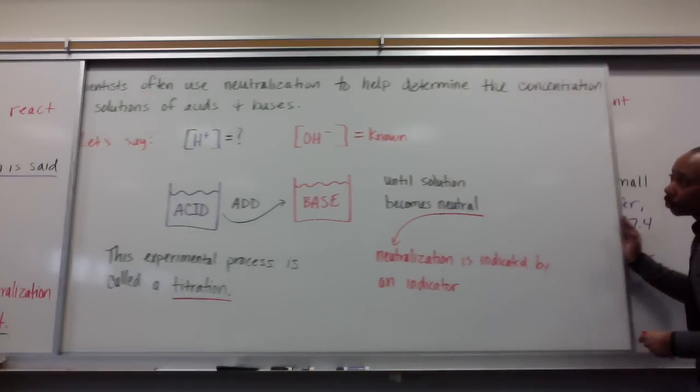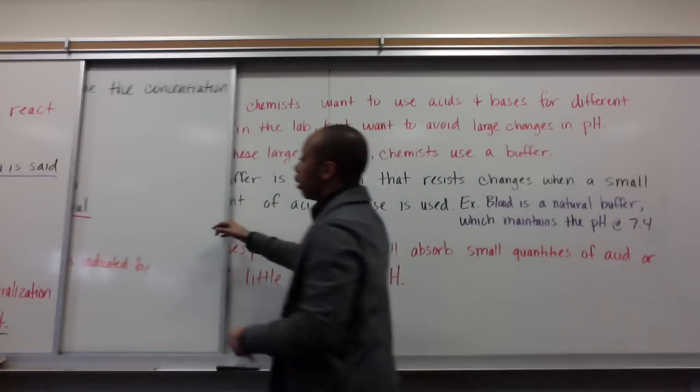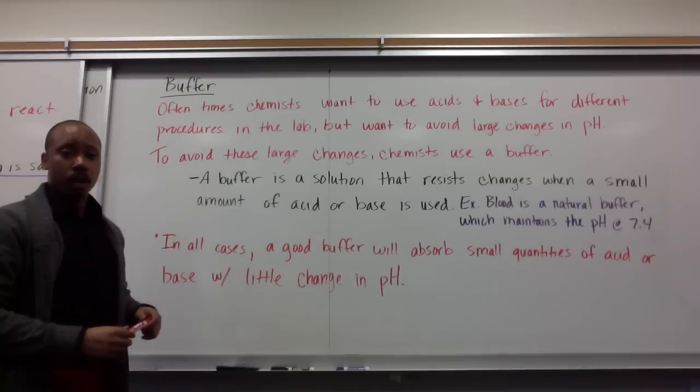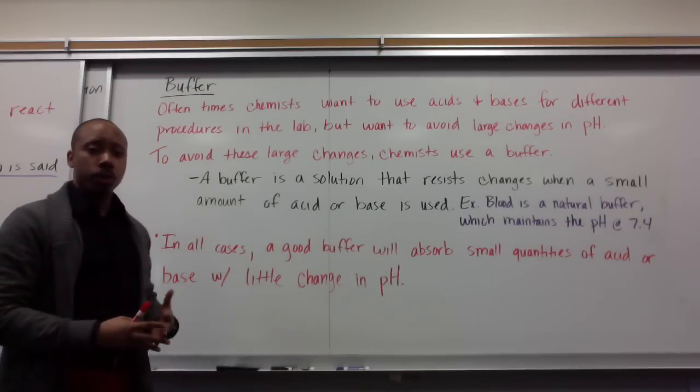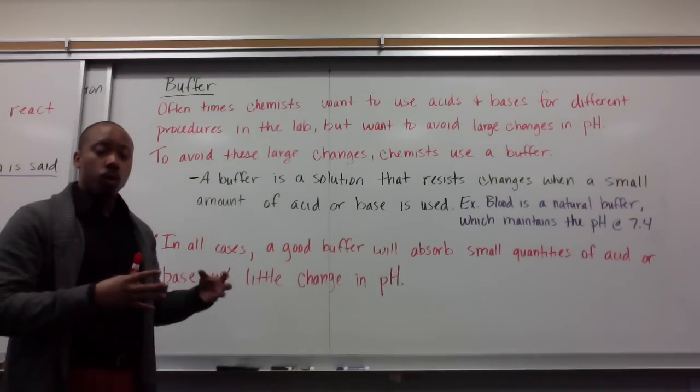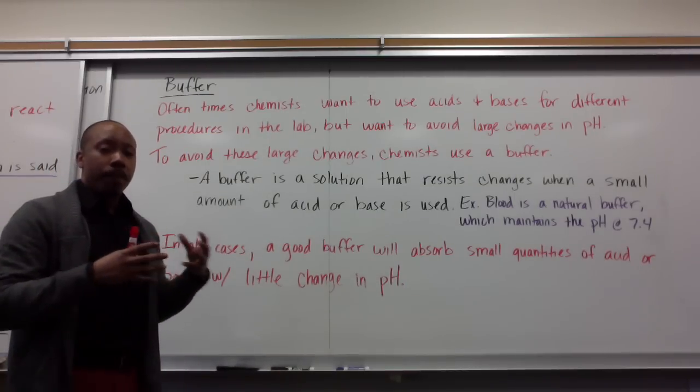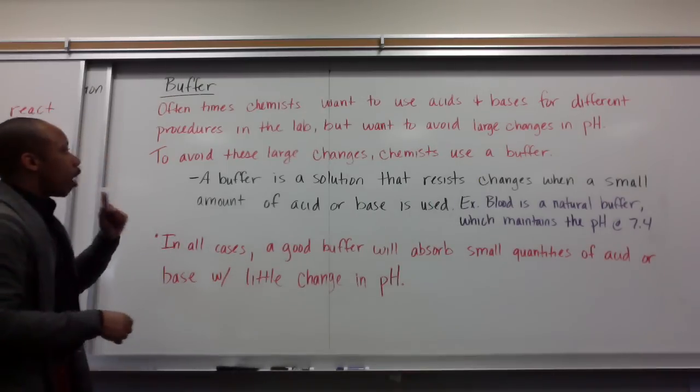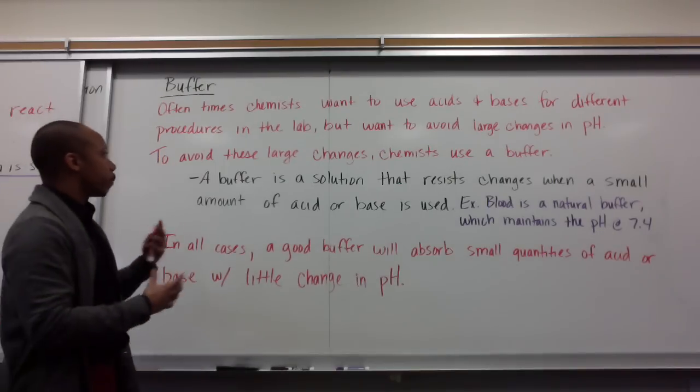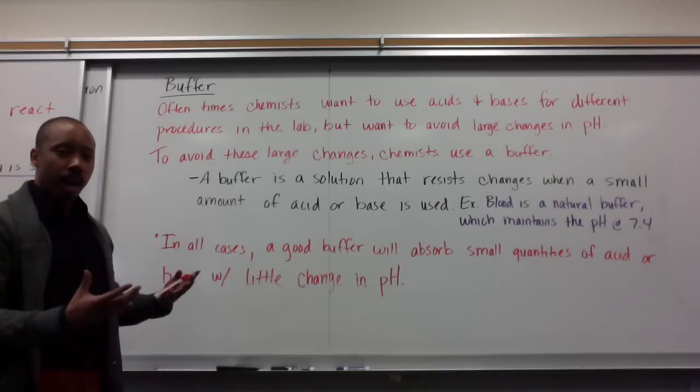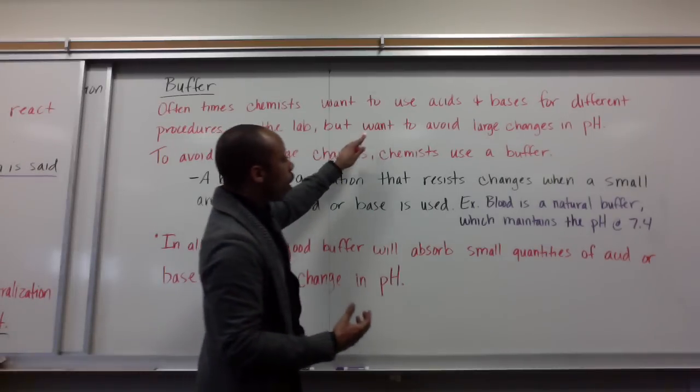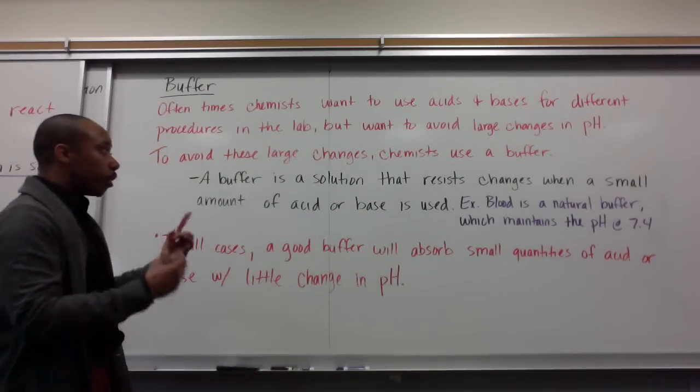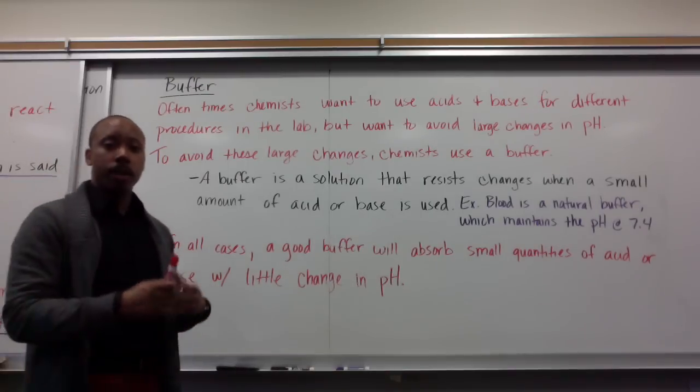Something else that chemists use in science dealing with acids and bases is something called a buffer. A buffer is a tool that chemists use to control the pH of a reaction. Oftentimes, chemists want to use acids and bases for different procedures in the laboratory, but want to avoid large changes in pH.